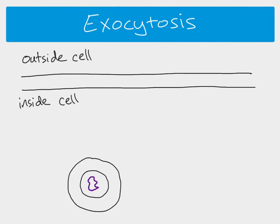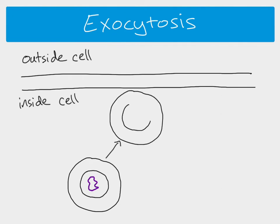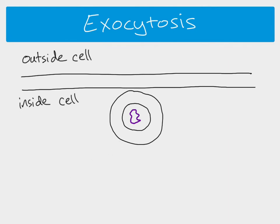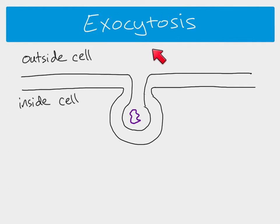We've got a substance inside a vesicle, which is pinched off from the Golgi body — it might be some kind of enzyme. The vesicle moves towards the cell surface membrane, and when it reaches it, the two membranes — both made of phospholipid bilayers — fuse together, creating an opening to the outside of the cell.